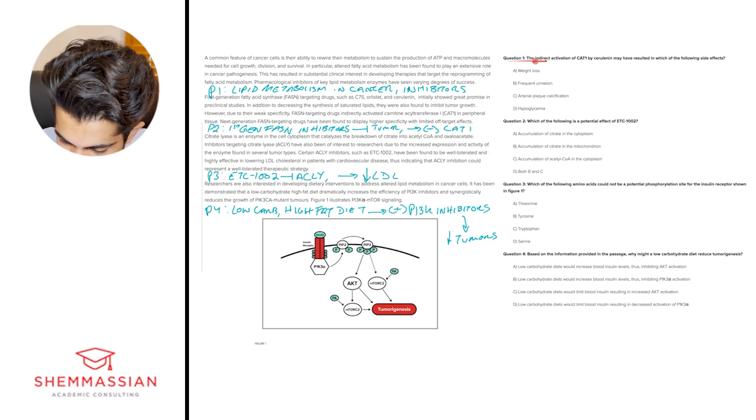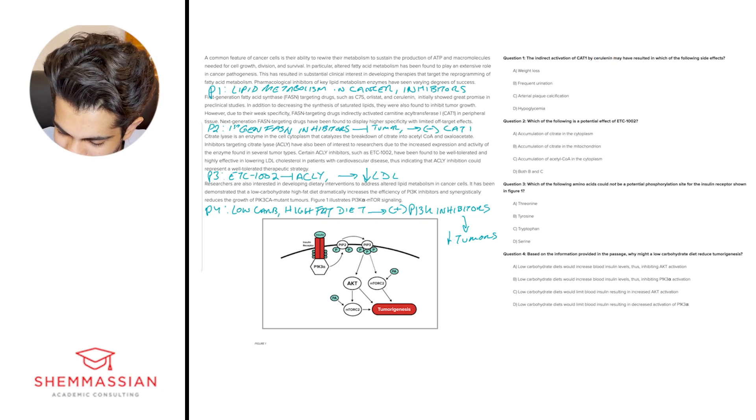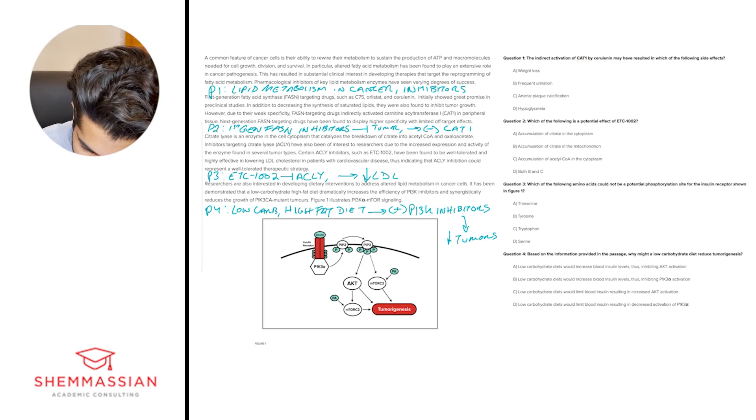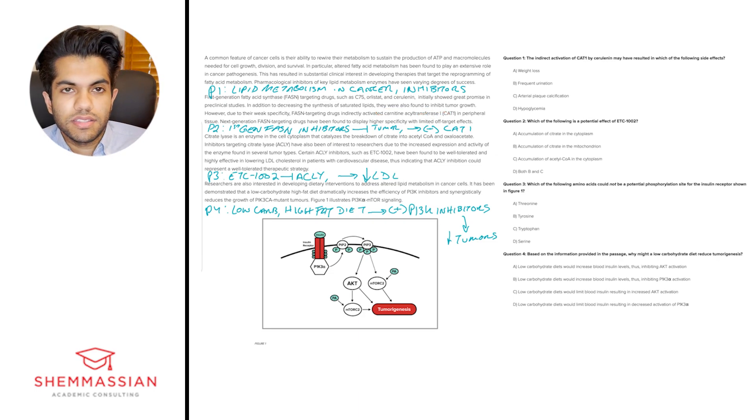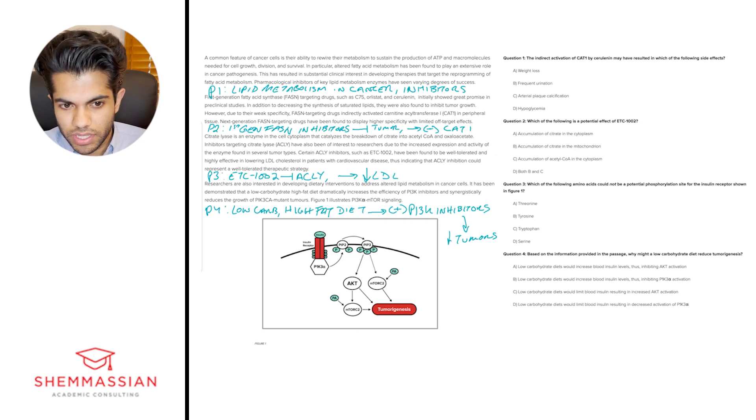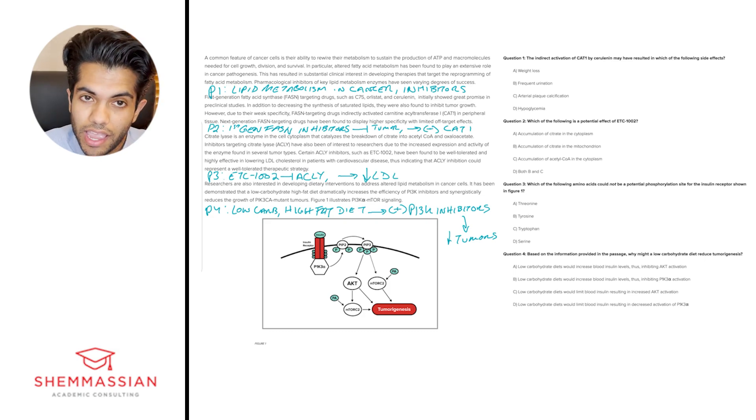So for question one, the indirect activation of CAT1 by serulenin may have resulted in which of the following side effects? A, weight loss, B, frequent urination, C, arterial plaque calcification, or D, hypoglycemia. All right, well, good thing the MCAT doesn't take off points for pronunciation here. Otherwise, I would have not gotten this one correct, but let's talk about the reasoning behind this. So you need to know for this question that CAT1, or as mentioned in the passage here, carnitine acyltransferase, it's an enzyme that catalyzes the rate limiting step of beta oxidation, which is the breakdown of fatty acids. So if we were to indirectly activate it, we would have more breakdown of our fat stores. And then if our fat stores are being broken down, then that would mean we would actually have some weight loss occurring. So out of all of these answer choices, that's going to make A our best answer.